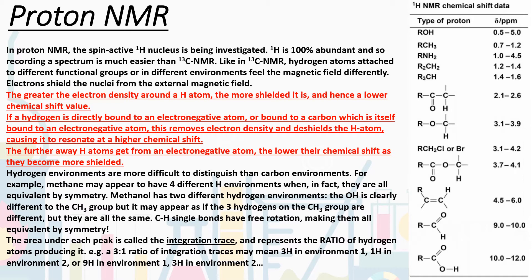Hydrogen environments are more difficult to distinguish than carbon environments. For example, methane, CH₄, may appear to have four different hydrogen environments, but in fact those are all equivalent by symmetry. As we talked about in the previous carbon-13 NMR video, one of the best ways to see how many environments we have is to look for symmetry in the molecule — for example, a mirror plane. For methane, all four hydrogens are equivalent by symmetry, so it has only one hydrogen environment.